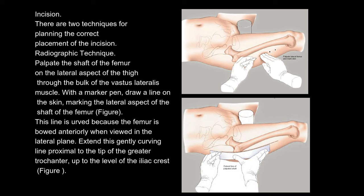Incision. There are two techniques for planning the correct placement of the incision. Radiographic technique: palpate the shaft of the femur on the lateral aspect of the thigh through the bulk of the vastus lateralis muscle. With a marker pen, draw a line on the skin marking the lateral aspect of the shaft of the femur. This line is curved because the femur is bowed anteriorly when viewed in the lateral plane. Extend this gently curving line proximal to the tip of the greater trochanter, up to the level of the iliac crest.